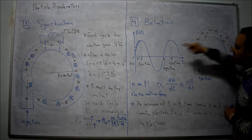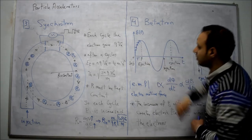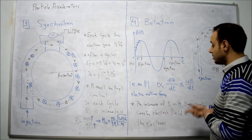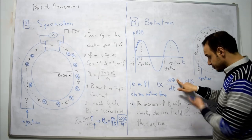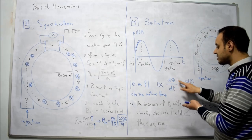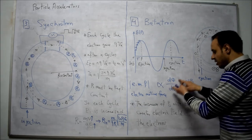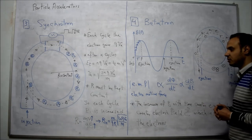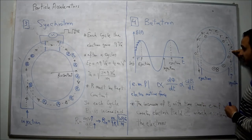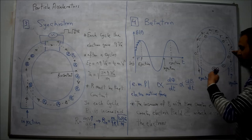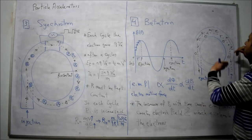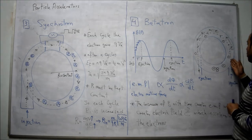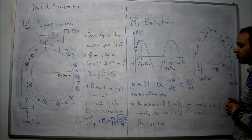This magnetic field is increased with time. So it creates an electromotive force, EMF, which is proportional to the change in magnetic flux over time. This increasing electric field will accelerate the electron. So the electron moves in a circular path and its velocity is also increased.